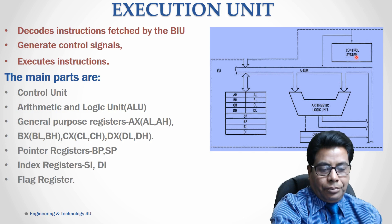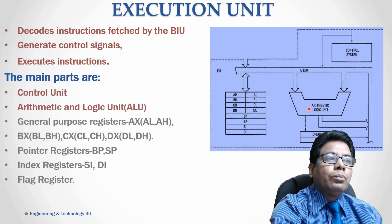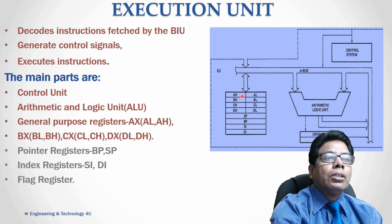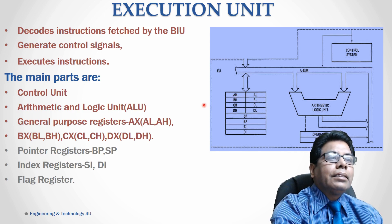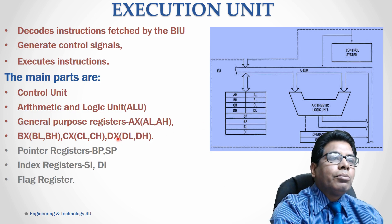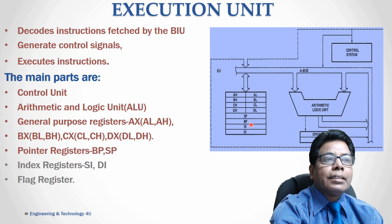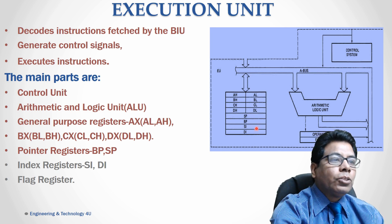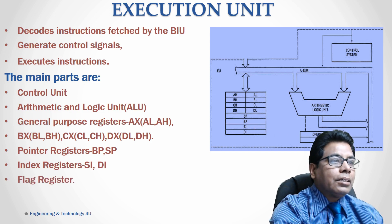The main parts of the EU are: the control unit, the ALU (arithmetic and logic unit), and the general purpose registers — AX, BX, CX, and DX. Each can be used as two 8-bit registers (e.g., AL and AH combine to form AX as a 16-bit register; similarly BL/BH form BX, CL/CH form CX, DL/DH form DX). There are also pointer registers BP and SP (base pointer and stack pointer), index registers SI (source index) and DI (destination index), and a flag register.